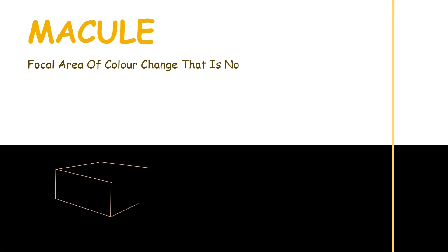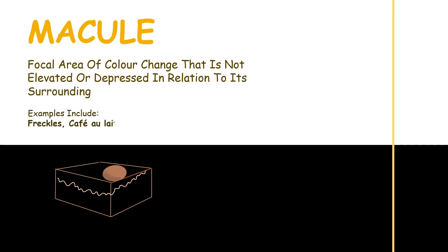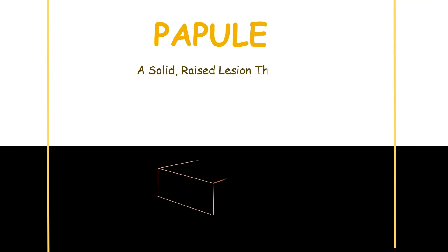A macule is a focal area of color change that is not elevated or depressed in relation to its surroundings. Examples include freckles, café-au-lait spots, and melasma, that is, mask of pregnancy.